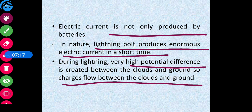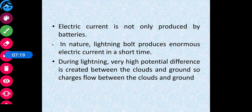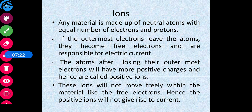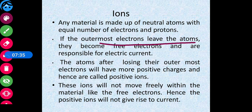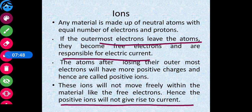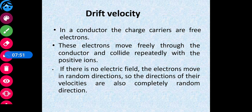All materials have free electrons. If the outermost electron leaves an atom, free electrons are produced and these are responsible for the electric current. However, the resulting positive ions do not move freely within the material like free electrons do, so positive ions do not give rise to current.